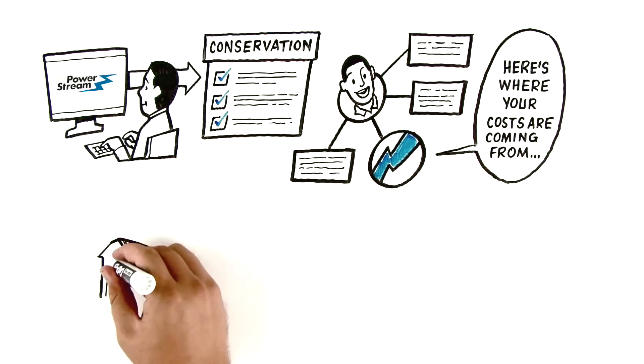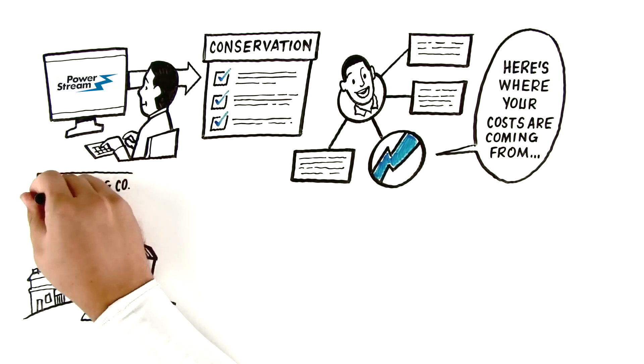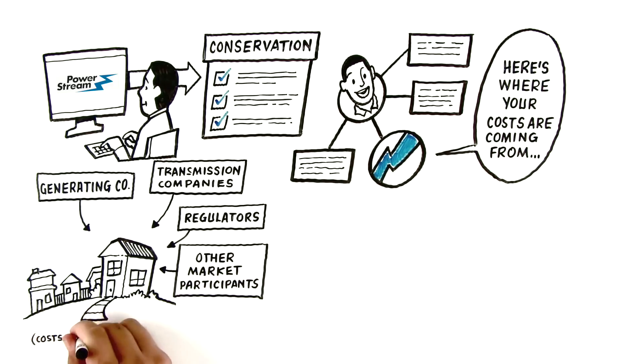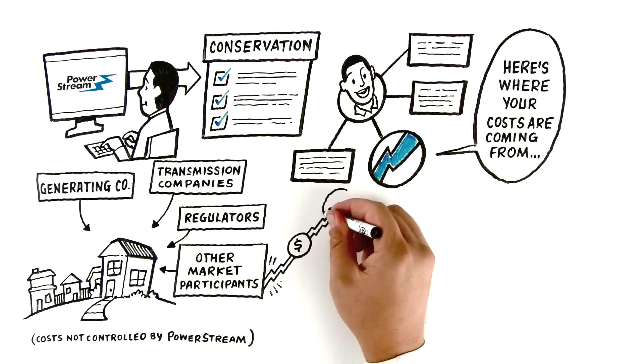For example, the price to produce the electricity the Martins and millions of other families just like them use every day is derived from the cost from generating companies, transmission companies, regulators, and other important market participants.